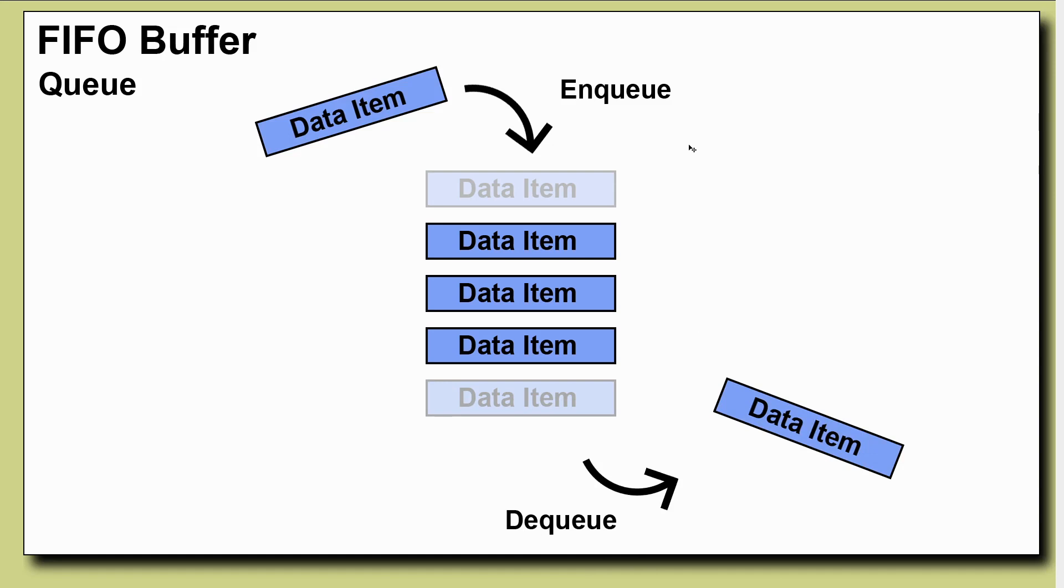So in the case of the UART, a received byte would be enqueued onto the front and then when the CPU takes a byte it would be the dequeue operation. Or on the opposite side of the UART when the CPU sends a byte that would be an enqueue and then when the UART is actually able to transmit it that would be a dequeue.